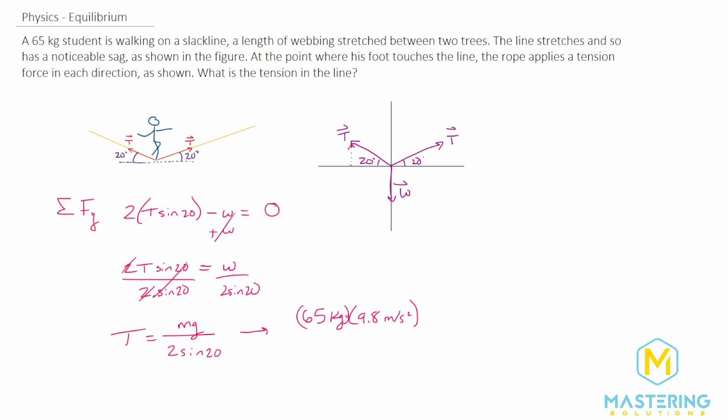If you look at the units, we have kilograms times meters per second squared, which is the expanded form of a newton. We have a force divided by a ratio, since we're finding the total from the y component.